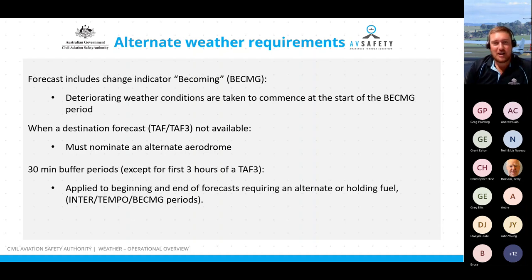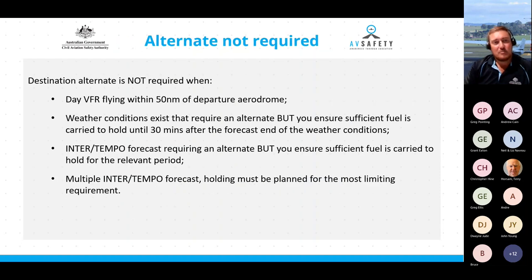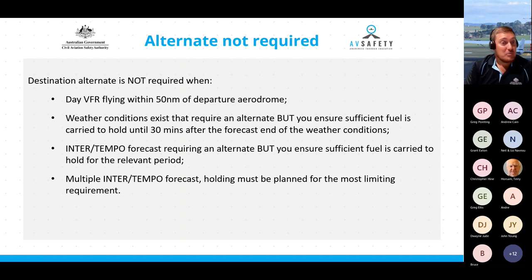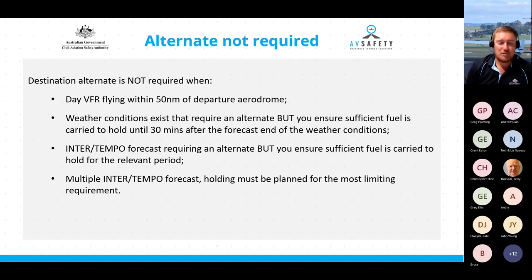When a destination doesn't have a TAF or TAF3 forecast, you must nominate an alternate aerodrome. Alternates are not required when you are flying within 50 nautical miles of your departure aerodrome, where you carry relevant holding fuel allowing you to hold for 30 minutes after the end of the forecast weather conditions, or you're carrying holding fuel for the relevant periods for either a TEMPO or INTER period. If you come across a forecast with multiple INTER or TEMPO periods, plan holding fuel on the most limiting requirement.